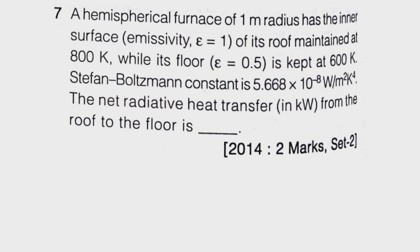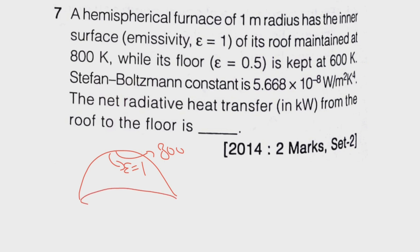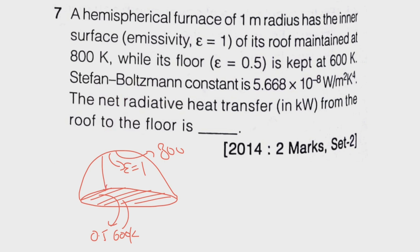Let us see the next question, which is very interesting. A hemispherical furnace of 1-meter radius has its inner surface maintained at 800 K with inner surface emissivity equal to 1. Its floor is a circular surface with emissivity 0.5, kept at 600 K. The Stefan-Boltzmann constant is given. We need to find the net radiative heat transfer from the roof to the floor.